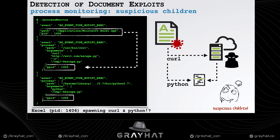Using Apple's Endpoint Security framework, it's easy to create a process monitor and detect suspicious children. For example, Microsoft Word spawning curl or Python is anomalous. So regardless of the exploit or how it occurred, if you see Excel spawning curl or Python, that's bad news — something is amiss, like maybe Patrick trying to hack your Mac.